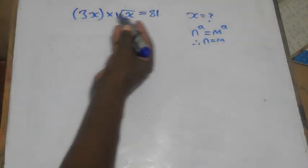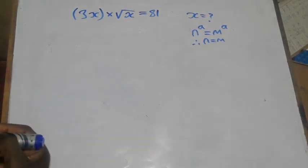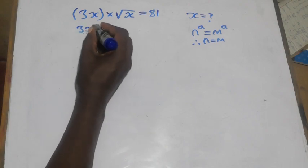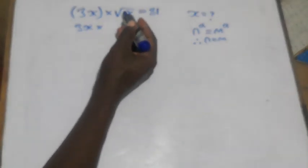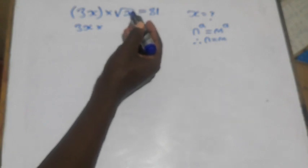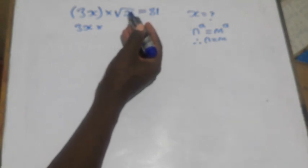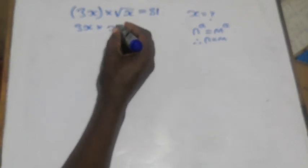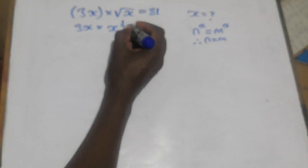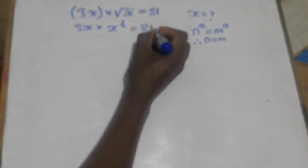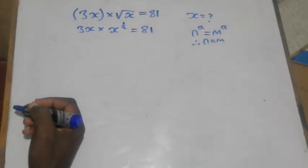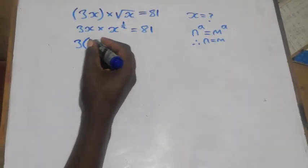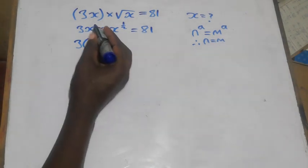We need to balance the powers. First, we convert the square root of x into a power, since square root is equivalent to the power of one-half. So square root of x becomes x to the power one-half, giving us 3 times x to the power one-half equals 81.